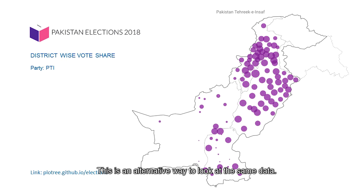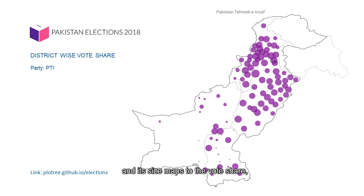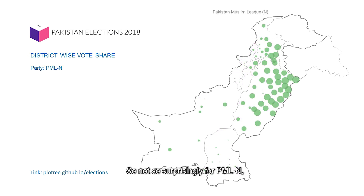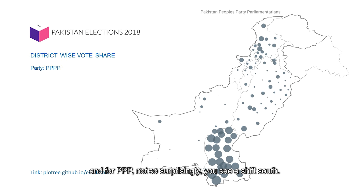This is an alternative way to look at the same data — showing PTI's vote share across districts in Pakistan, where each bubble corresponds to a district and its size maps to the vote percentage. If we change the political party, notice the geographical shift: for PMLN, we see a shift towards Punjab, and for PPP, not so surprisingly, you see a shift south.